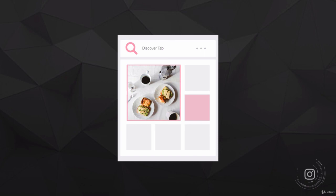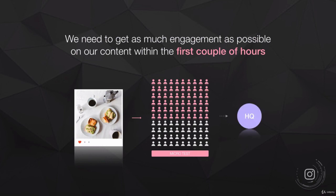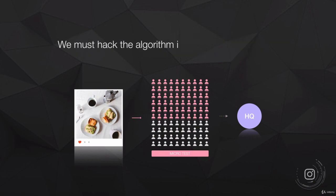Our hack here is to get as much engagement as possible within the first couple of hours of posting, because that first couple of hours is the micro-test phase. If we can maximize engagement during that window, Instagram will rate our content at the top tier of quality. We can actually get all of our posts to do far more than a 10% reach — up to 100% to 200% reach on average to our audiences — just by hacking the Instagram algorithm in this micro-test phase.